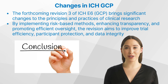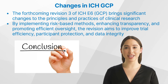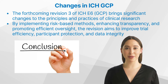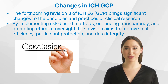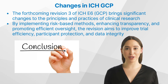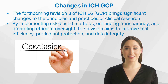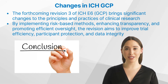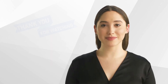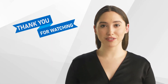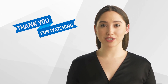In conclusion, the forthcoming Revision 3 of ICH E6 GCP brings significant changes to the principles and practices of clinical research. By implementing risk-based methods, enhancing transparency, and promoting efficient oversight, the revision aims to improve trial efficiency, participant protection, and data integrity. Stakeholders must embrace these changes and adapt their operations to future-proof their clinical trial processes. By staying informed, leveraging technology, and fostering collaboration, organizations can navigate the evolving landscape of clinical research and contribute to the advancement of medical knowledge and patient care. Thank you for watching our video, and we hope you found it useful. Don't forget to like and subscribe to our channel for more clinical research content.